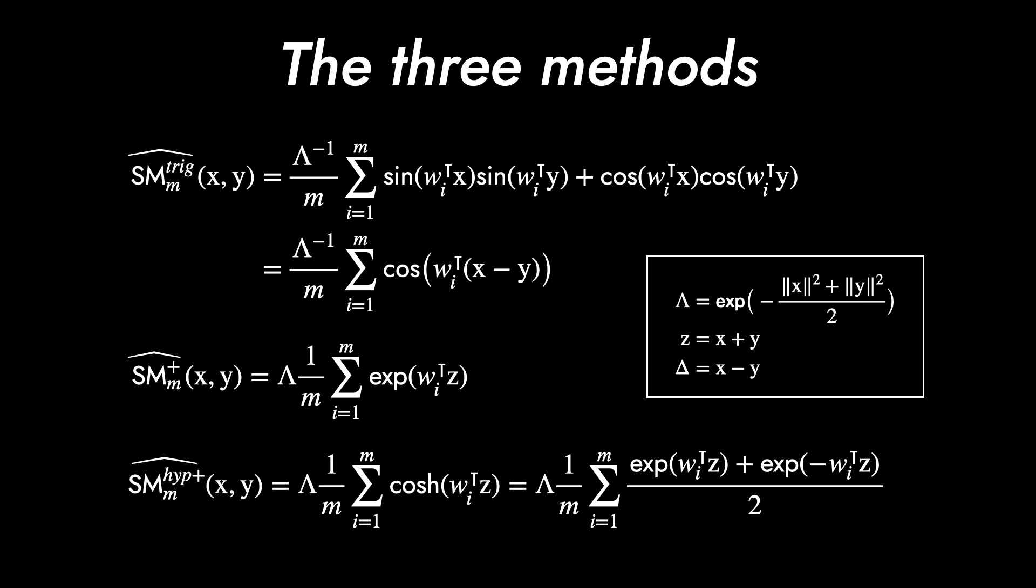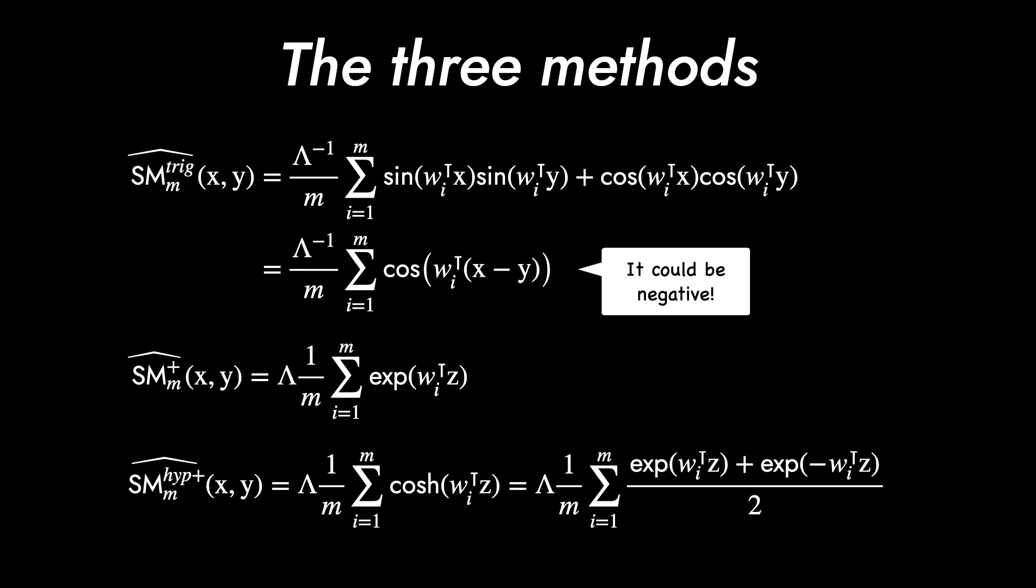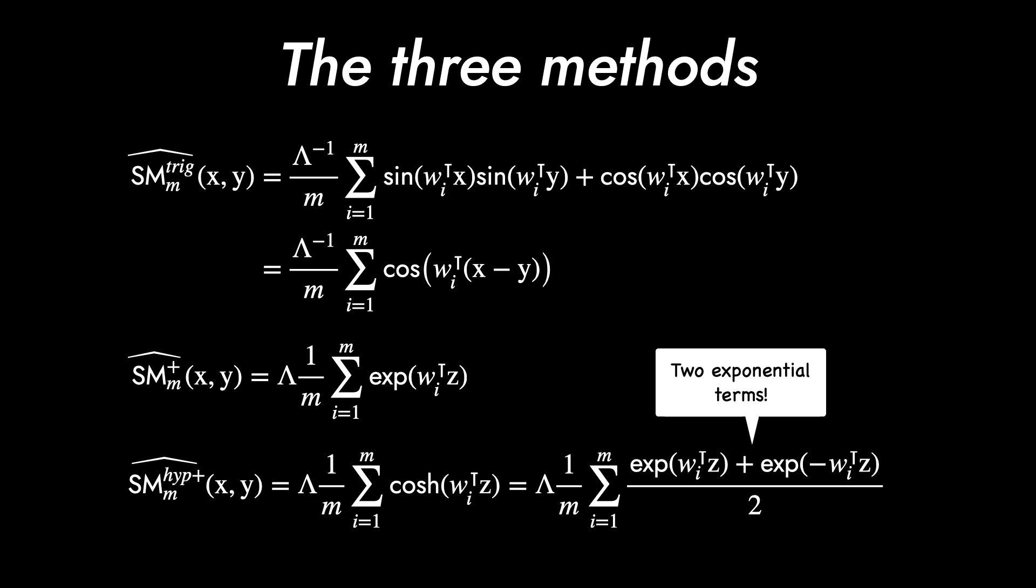Here are summarizations of three approximation methods. Their first method using trigonometric functions potentially outputs negative values for the cosine function. SM plus and SM hype plus have similar forms. SM hype plus exploits the negative of sampling along with positive sampling at once. Is it really helpful? And how much helpful? That's the question to answer in the following analysis.